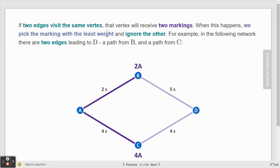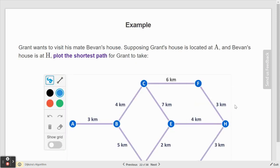If two edges visit the same vertex, that will get two markings. When this happens, we pick the marking with the least weight and ignore the other. For example, in the following network, there are two edges leading to D, one from B and one from C. Two and five gives us seven from B, hence the 7B and the 8C. Four and another four give us eight, and you only want to keep the shortest one because we're trying to find the shortest path.